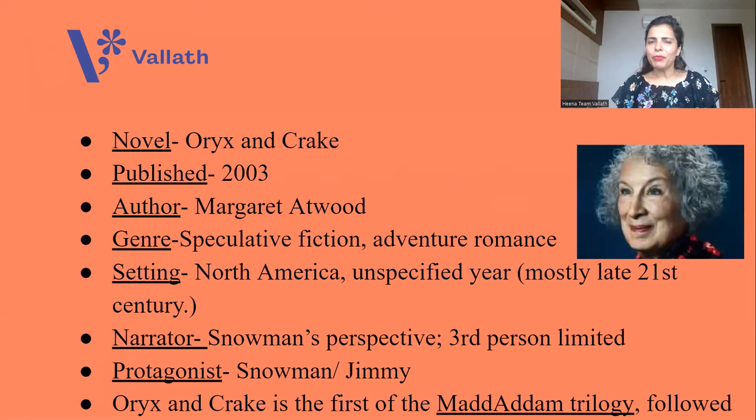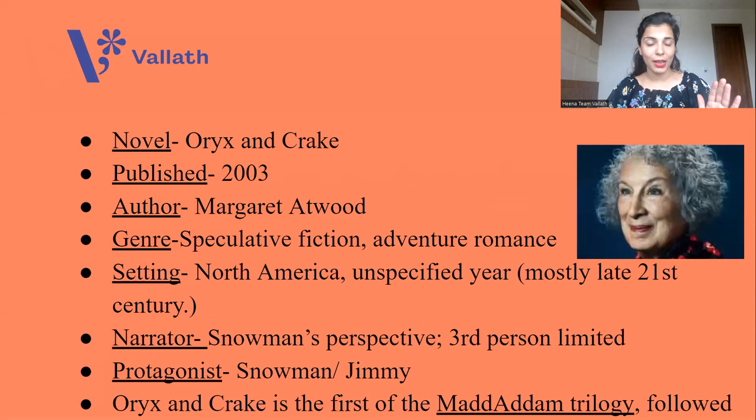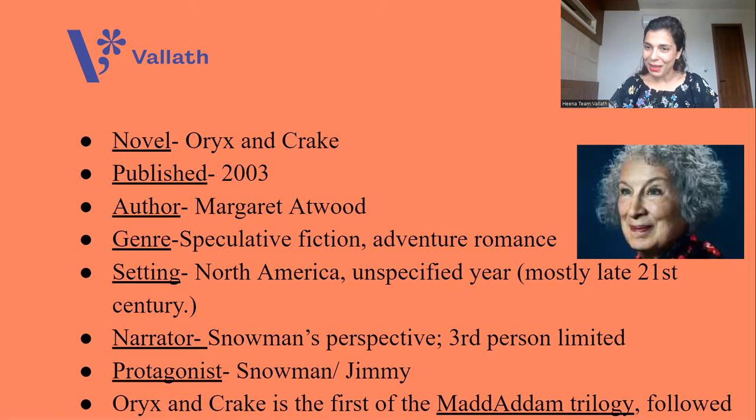Published in the year 2003, written by Margaret Atwood. The genre is speculative fiction and adventure romance. People called it sci-fi or science fiction, but Margaret said no — do not call it sci-fi because her novel does not deal with things that humans can't do. All this is doable. So call it speculative fiction. We will call Oryx and Crake speculative fiction.